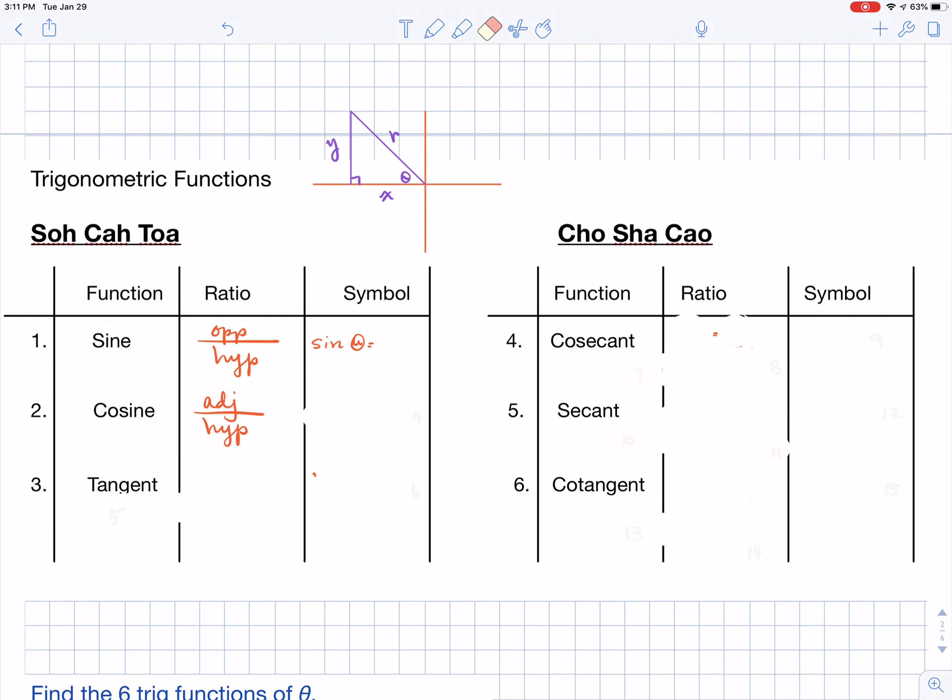Cosine is my next trig function, and cosine is going to be adjacent divided by hypotenuse. The symbol for that is going to be cos, again we still pronounce that as cosine. And again, notice that cosine is not separated from its angle, they're still together.